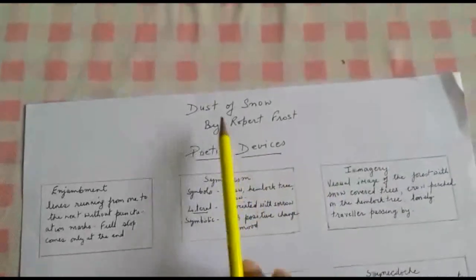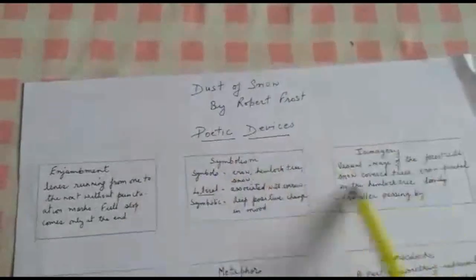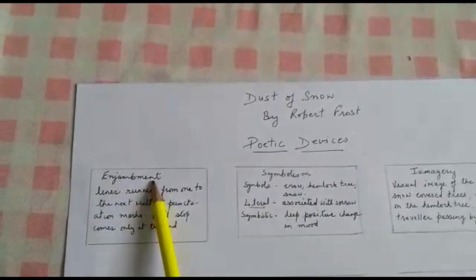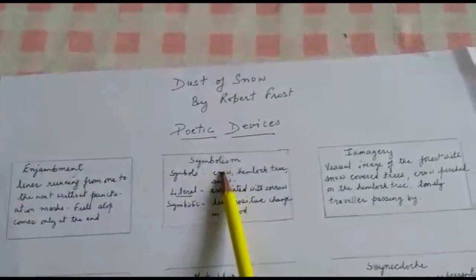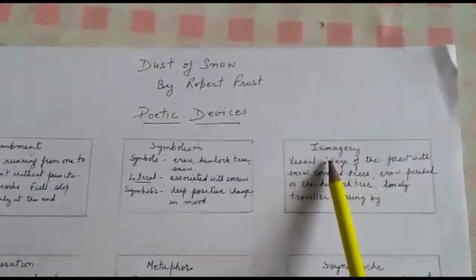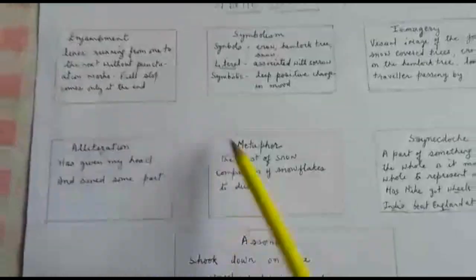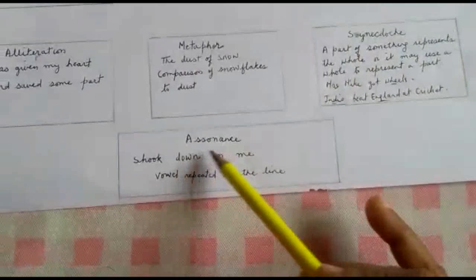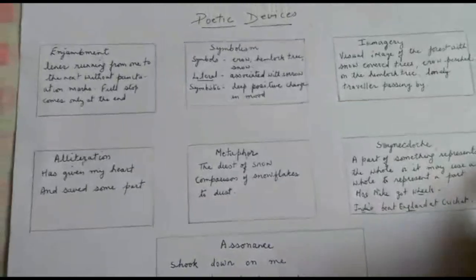The poem is Dust of Snow by Robert Frost and today we are going to talk about the various poetic devices. I'll just introduce you to them first. First is enjambment — I'm sure you've heard of it for the first time but I'll be explaining you properly. Then we have symbolism, imagery, alliteration, metaphor, synecdoche, and assonance. Most of them are very new to you but I'll be explaining all of them properly.